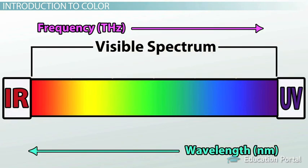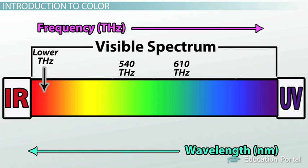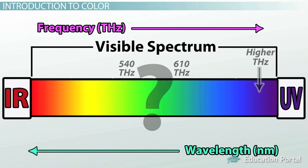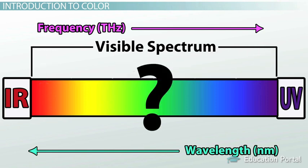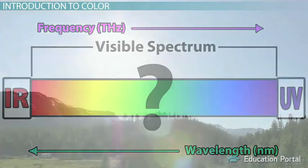All of the colors in the visible light spectrum are characterized by different frequencies. Green colored light lives between 540 and 610 Terahertz. For red, the frequencies are a bit lower. For violet, they are higher. But what determines the color of an object? How do the frequencies get divided out between red, green, and violet objects?